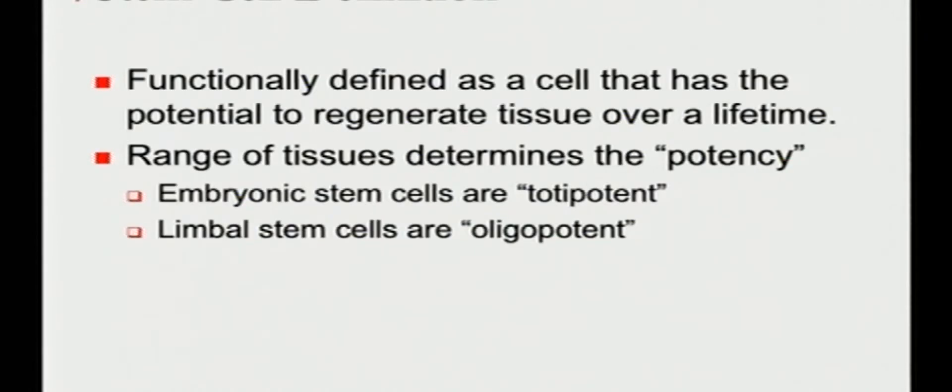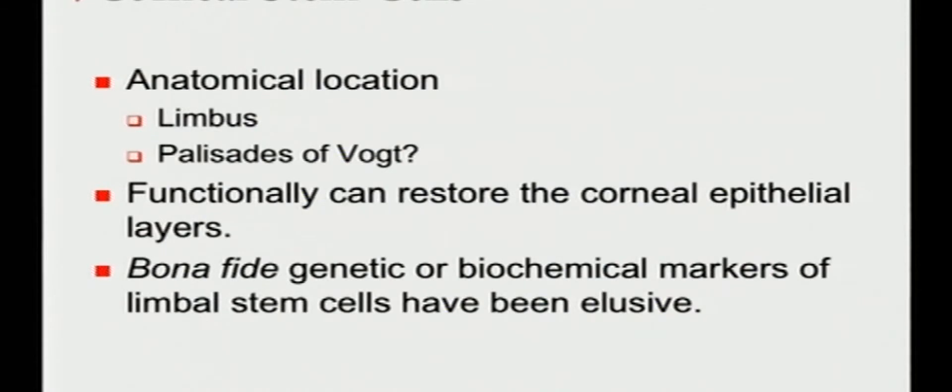Stem cells are defined as cells which have the potential to regenerate a tissue over lifetime. Stem cells come in various potencies. The stem cells we tend to work with on the ocular surface are adult stem cells. Your typical limbal epithelial stem cell isn't going to become a liver or a heart or a kidney, although maybe we could force it to do so using molecular methods. So we have oligopotent stem cells. There are other kinds of stem cells which are more totipotent, like embryonic stem cells, and those also have been proposed to be used for ocular surface indication.